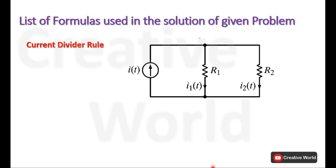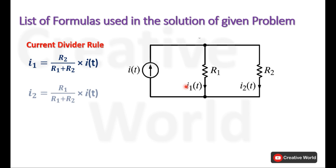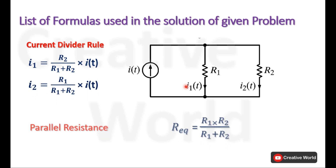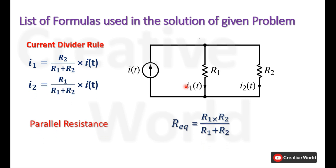Basic questions for the calculation of current I1 and I2 for this particular circuit using current divider rule is provided here. We also will be using parallel equivalent resistance calculation formula for two parallel connected resistances. R equivalent is equal to the product of both parallel connected resistances divided by their sum.